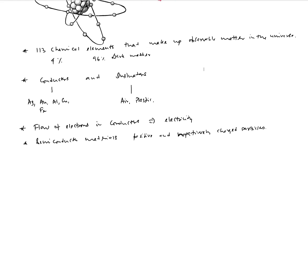To harness the power of electrons we have developed a device called a battery. Batteries are devices that give us a steady supply of electrons, which in turn leads to a steady supply of current. We will discuss the concept of a battery and look at a very popular primary cell called the galvanic cell.